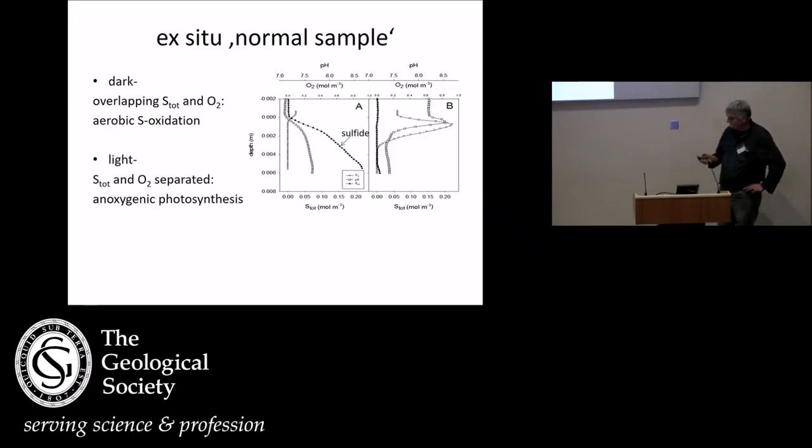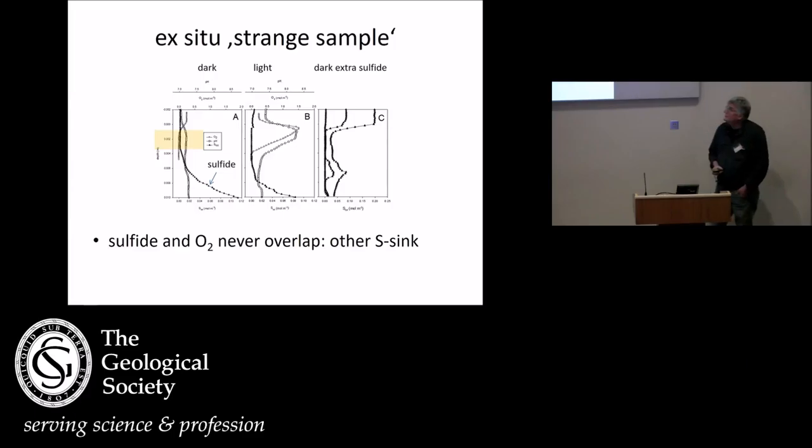Then we sampled. Also, we did experiments in the lab. We took lots of samples every day. And we found roughly two types of microbial mats. One, as expected, normal. Here you see sulfide. In the dark, sulfide reaches the surface. It diffuses upwards from large depth. And when you switch on the light, sulfide disappears almost completely. And there's a big gap between the oxygen and the sulfidic zone. That is because there's anoxygenic photosynthesis.